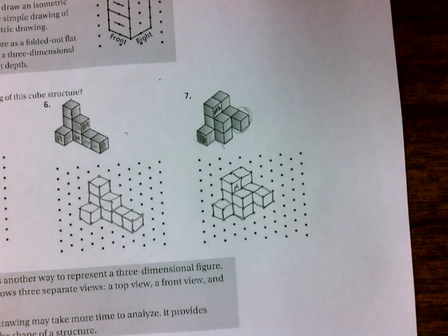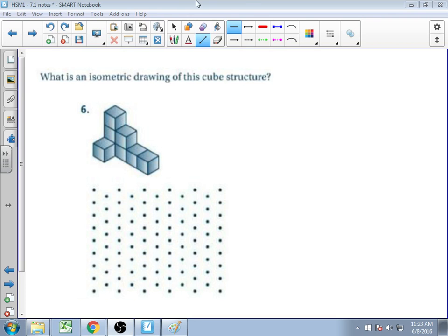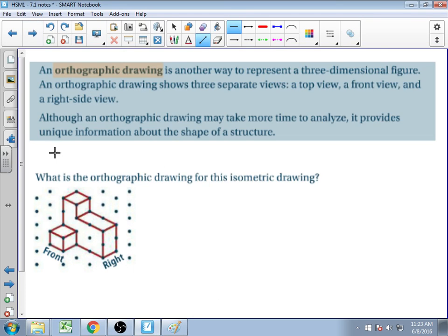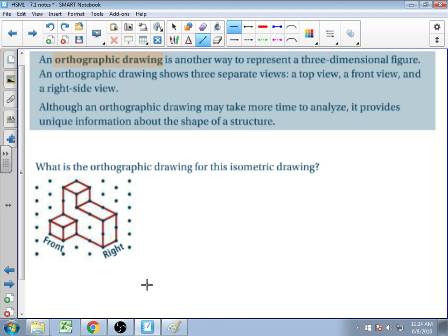Now we're going to talk about orthographic drawings. Orthographic drawings are a great way to represent 3D shapes. It's taking the isometric drawing and turning it into a two-dimensional drawing based on perspective — whether it would be the front view, the right view, or the top view. Those are normally the three different views we take.